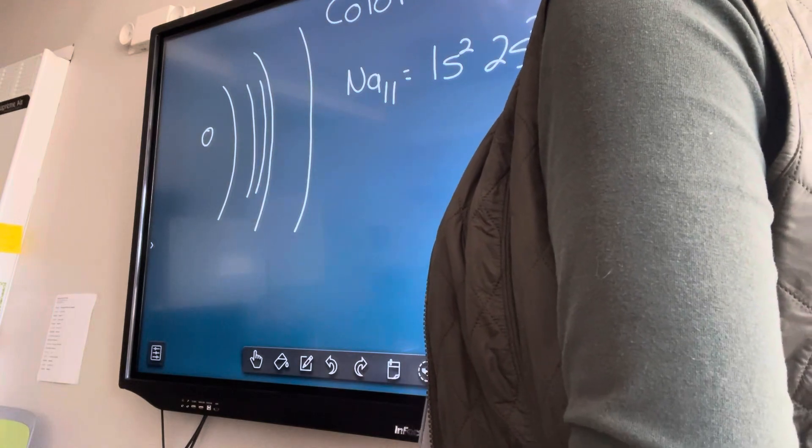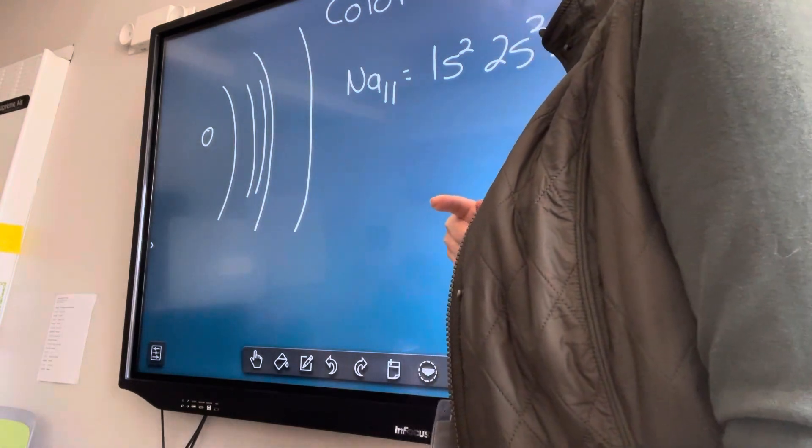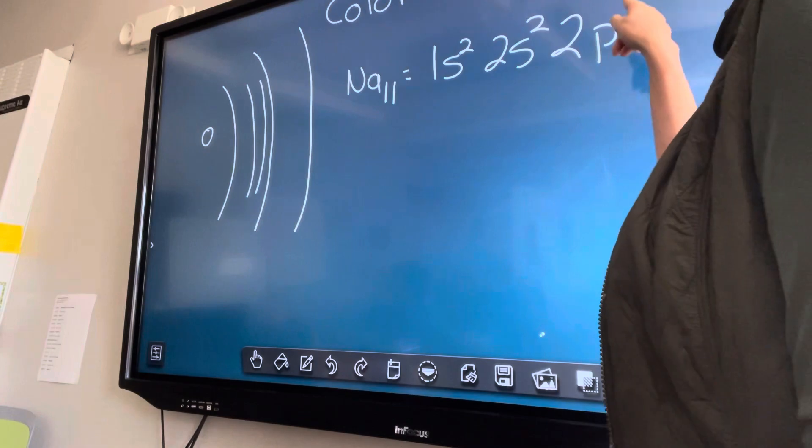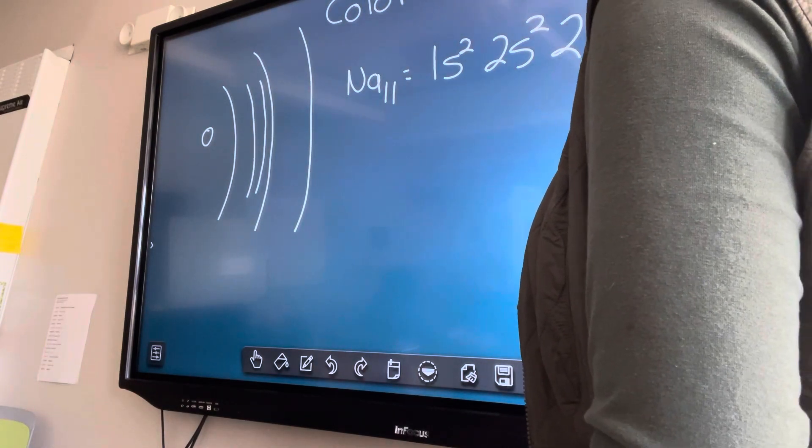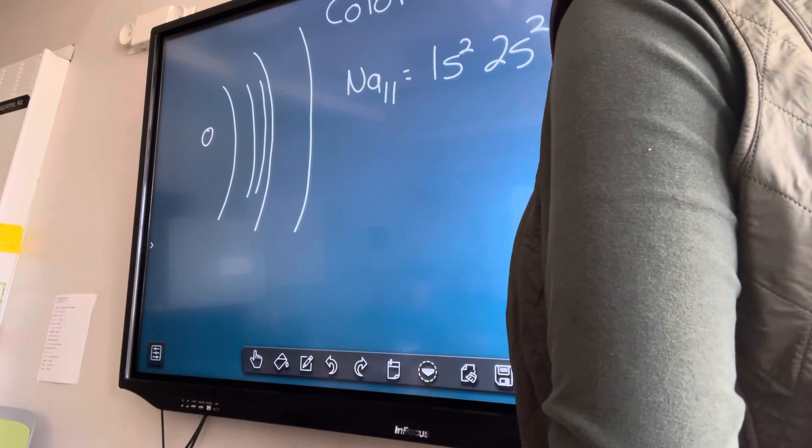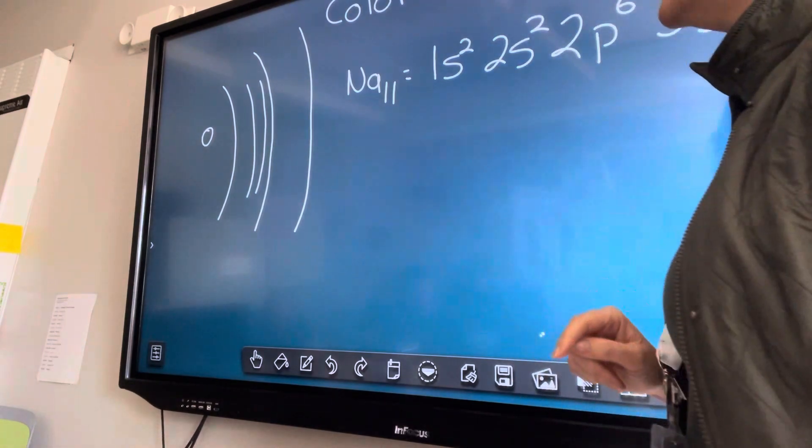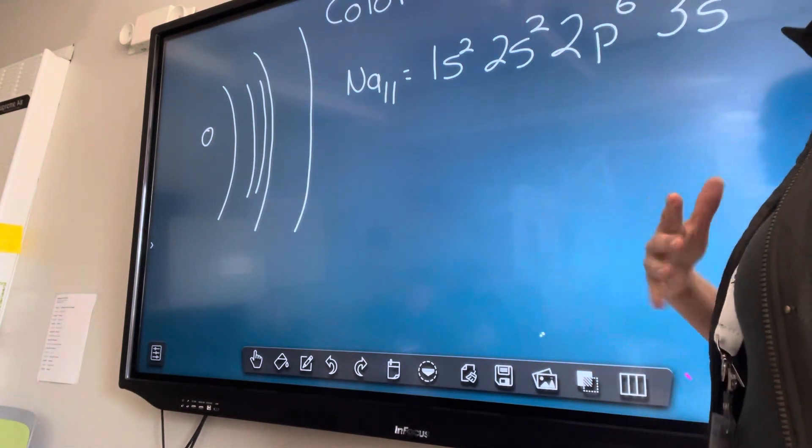Skip the p. 2p⁶ and 3s¹. Yeah, 3s¹. And then we have our 11 electrons accounted for, right?